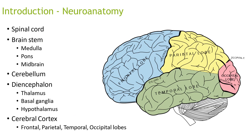Looking at neural anatomy: you have the spinal cord, the brain stem — which has the medulla, pons, and midbrain — the cerebellum, the diencephalon — which has the thalamus, basal ganglia, and hypothalamus — and the cerebral cortex, which has the frontal, parietal, temporal, and occipital lobes. You can see here the cerebral cortex with all four lobes illustrated in the diagram.